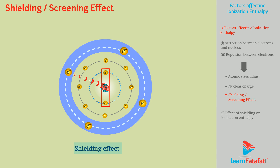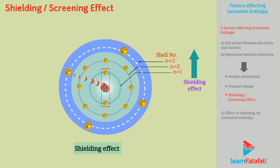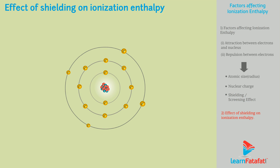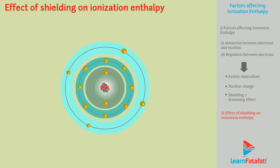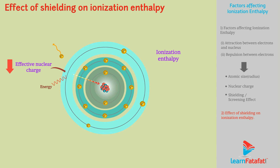We say that outer electrons are shielded by inner electrons. With increase in principal quantum number, that is the shell number, shielding effect also increases. So, shielding effect on the outermost shell is highest, whereas shielding effect on the innermost shell is lowest. As shielding effect increases from the first shell to the outermost shell, effective nuclear charge acting on outermost shell electrons decreases. So force of attraction by the nucleus to the outermost shell electrons decreases, making it easy to remove an electron. Hence, ionization enthalpy decreases with increase in shielding effect on the particular shell or electron.